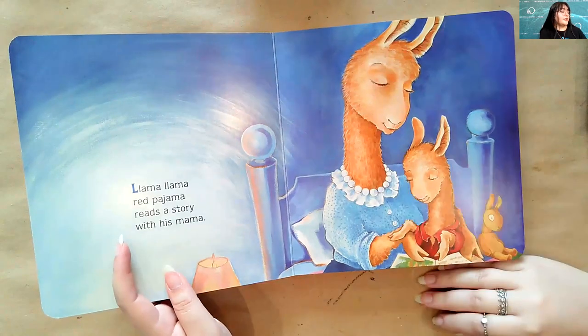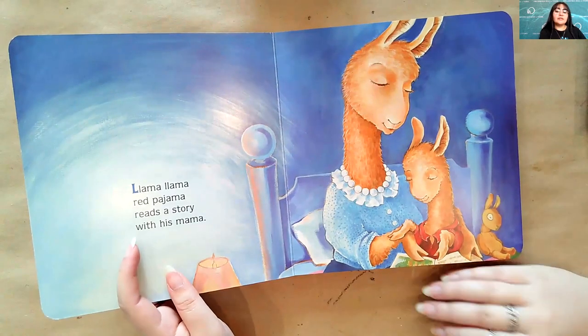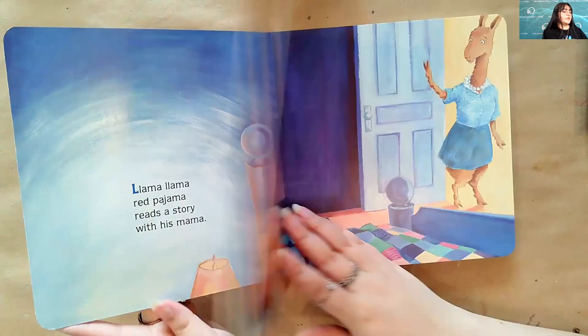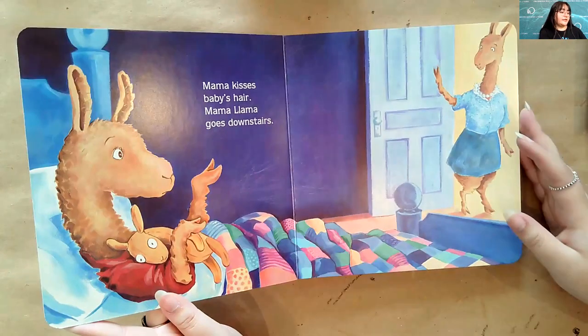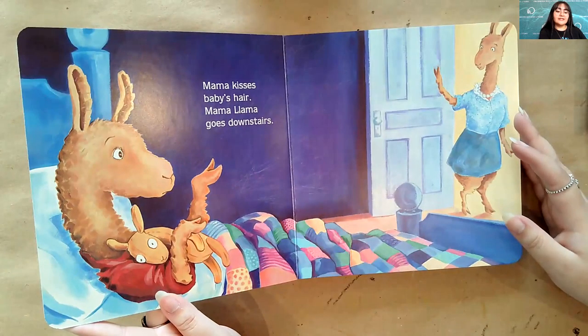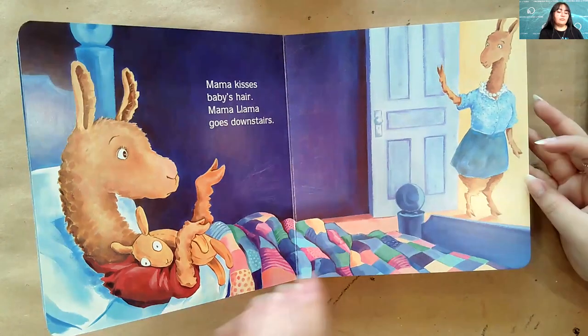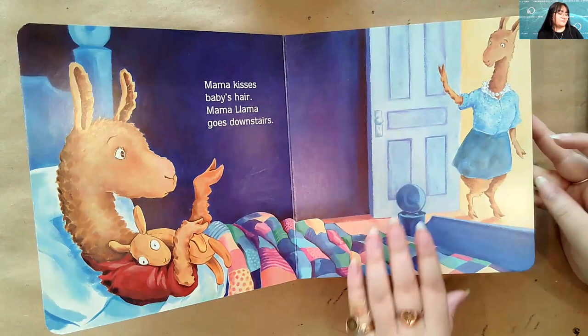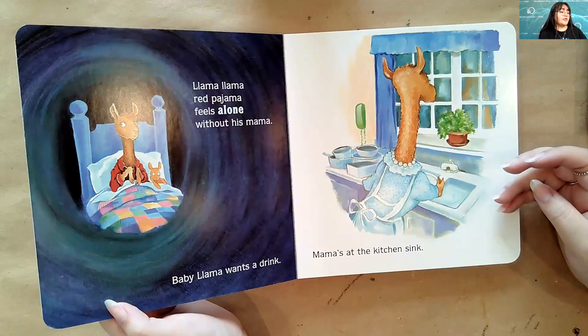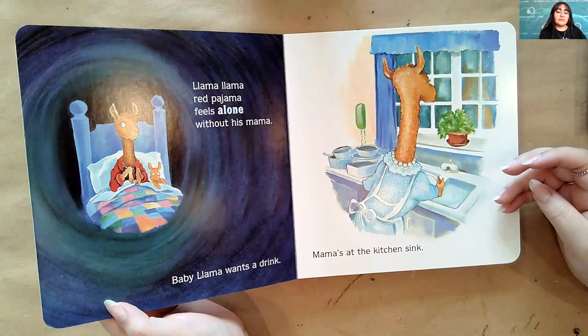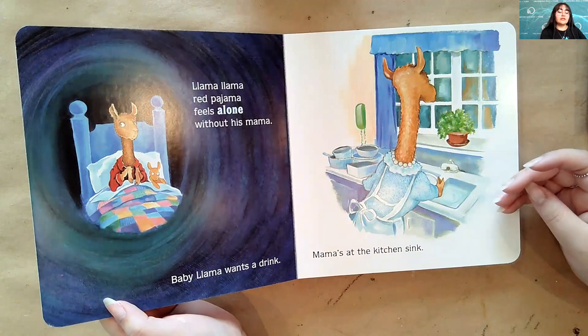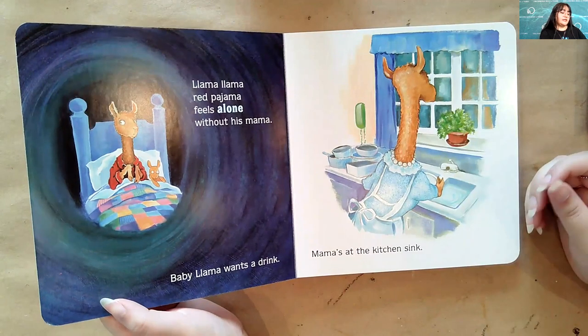Llama Llama Red Pajama reads a story with his mama. Mama kisses baby's hair. Mama Llama goes downstairs. That's a really cute blanket, by the way. I really like it. Llama Llama Red Pajama feels alone without his mama. Baby Llama wants a drink. Mama's at the kitchen sink.